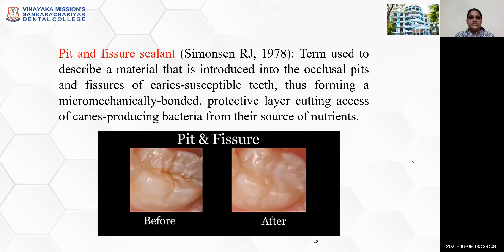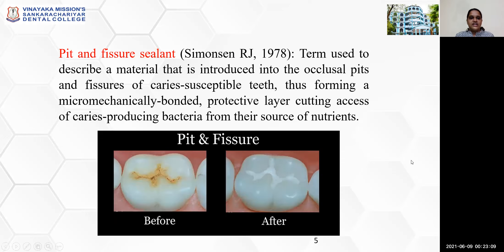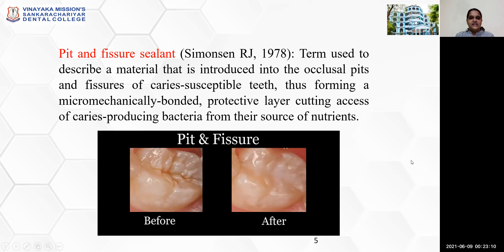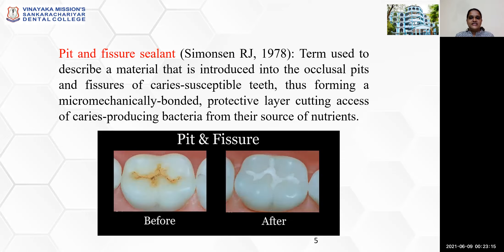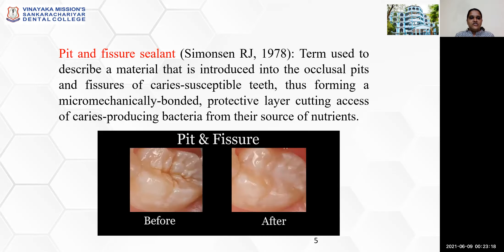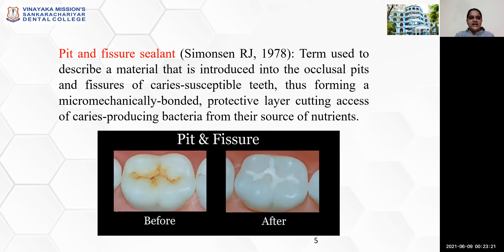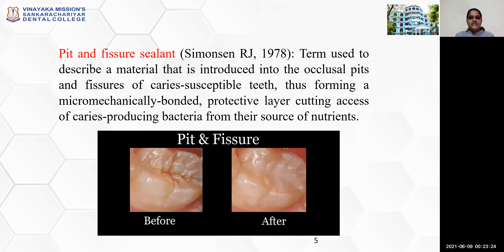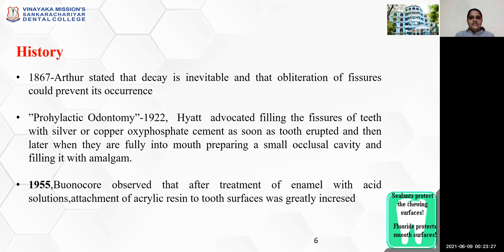Pit and fissure sealant definition was given by Simonson in the year 1978. He used the term to describe a material that is introduced into the occlusal pits and fissures of caries-susceptible teeth, thus forming a micromechanically bonded protective layer, cutting access of caries-producing bacteria from their source of nutrients.